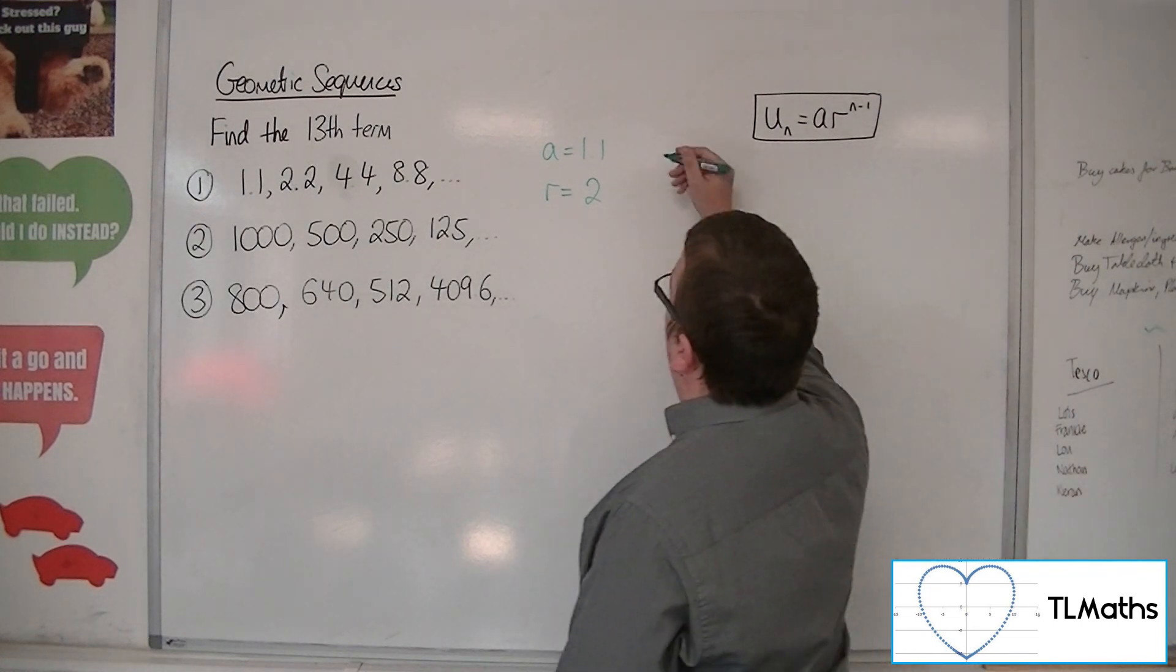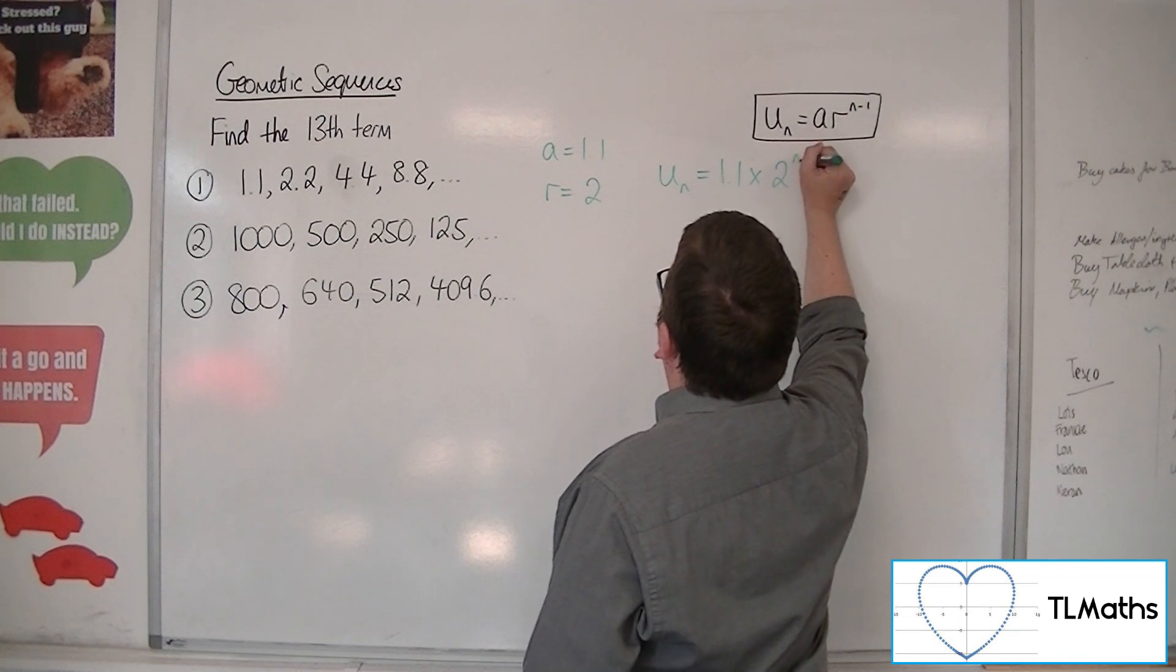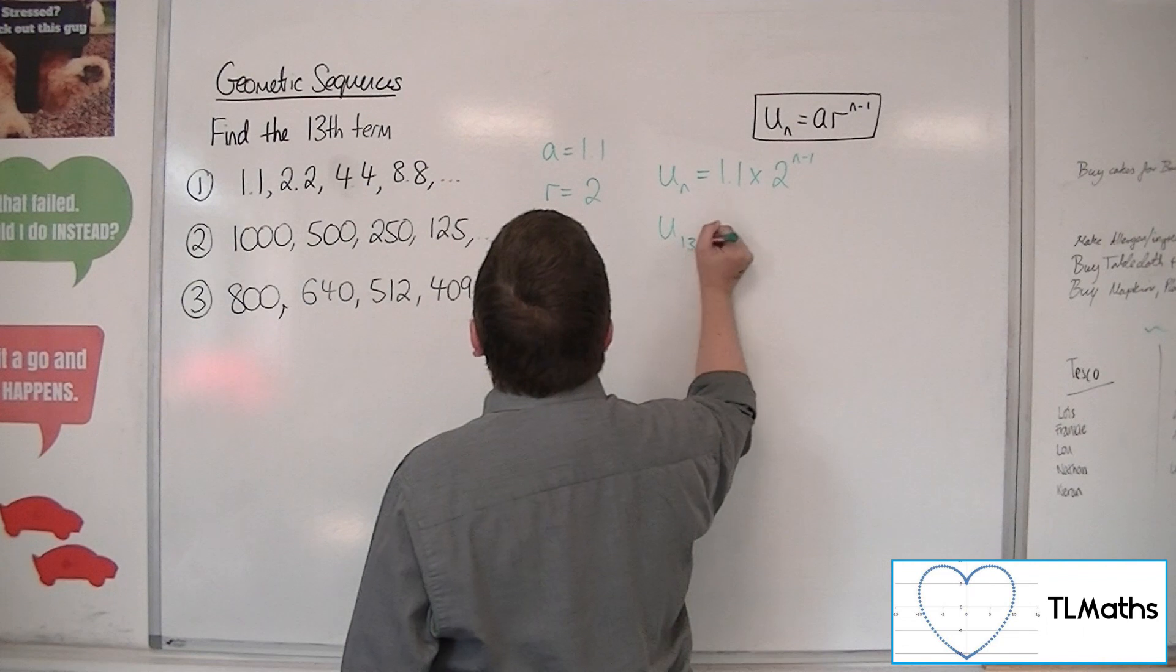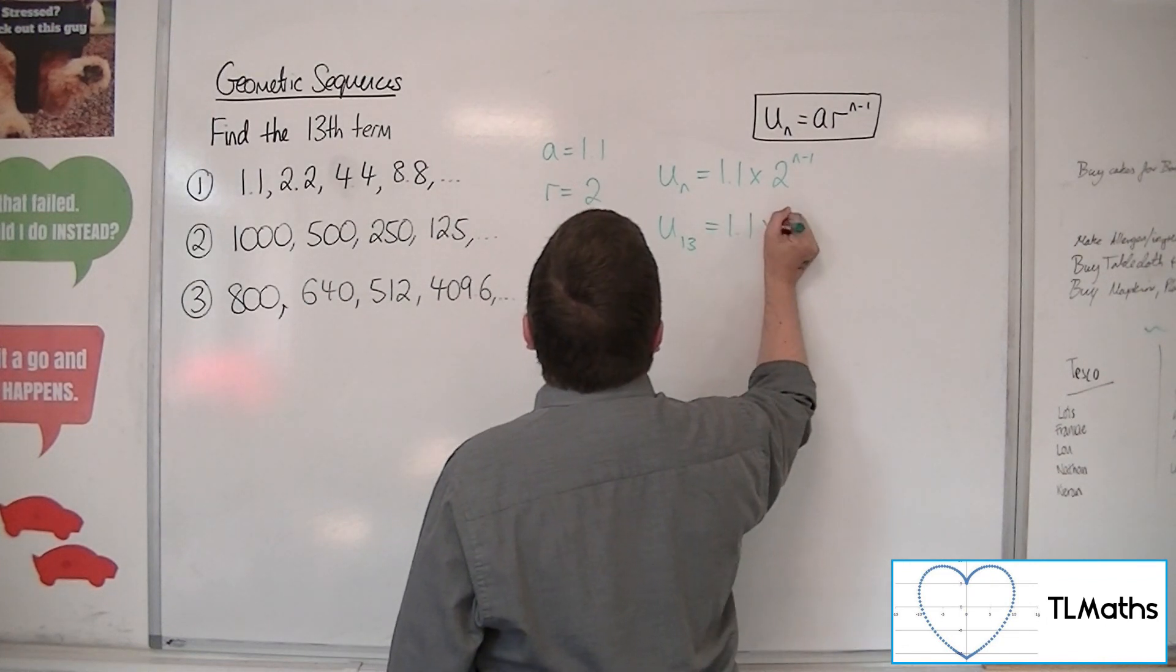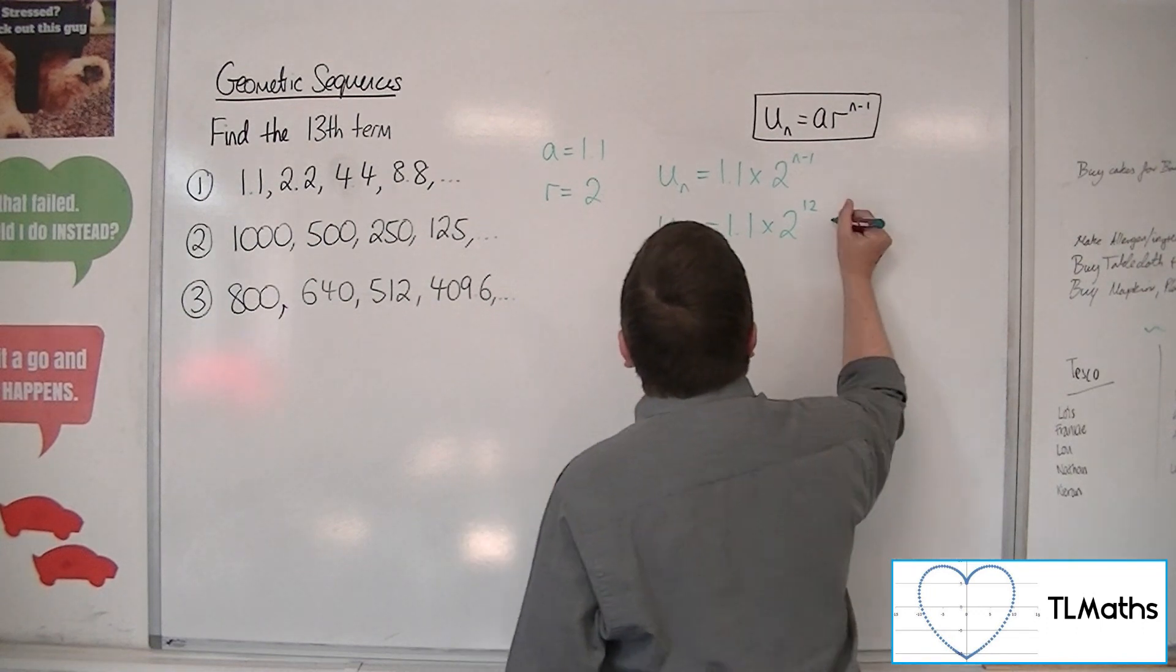So the nth term, un, is the first term times by the common ratio to the power of n minus 1. So the 13th term will be 1.1 times 2 to the 12, 13 take away 1.